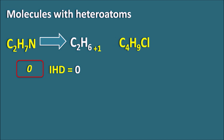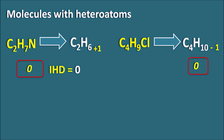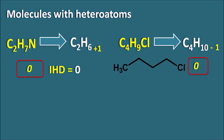Let us take another example: C4H9Cl. The corresponding saturated compound will have a molecular formula of C4H10. But because of the presence of halogens, we have to decrease the number of hydrogens by 1. So C4H10 minus 1 gives C4H9. The difference between the hydrogens in the sample compared with the saturated molecular formula is 0, so the IHD value is 0. C4H9Cl is simply butyl chloride — there is no pi bond and it is not a cyclic structure, so IHD value is 0.